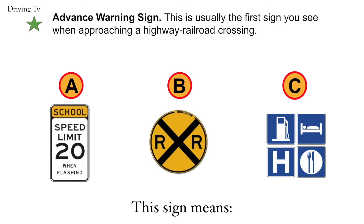Advance warning sign. This is usually the first sign you see when approaching a highway railroad crossing. The correct answer is B. Advance warning sign.